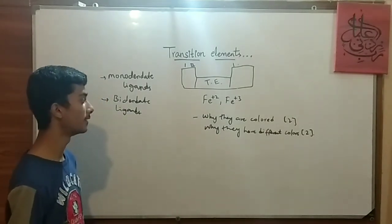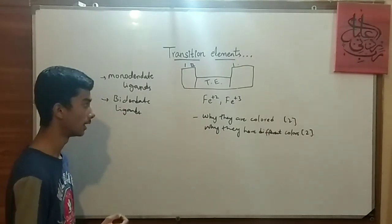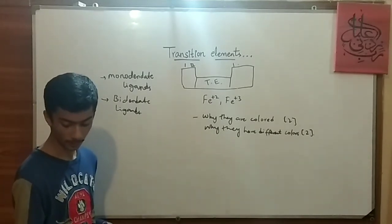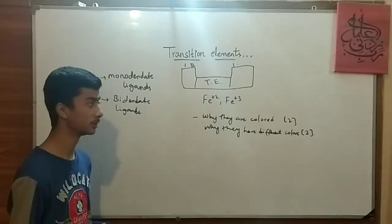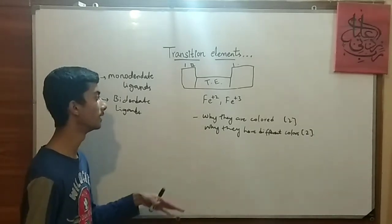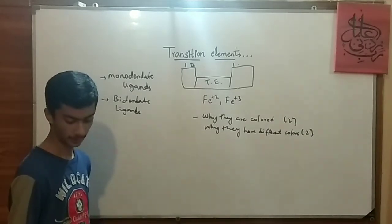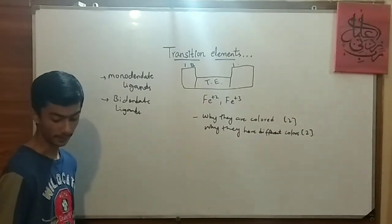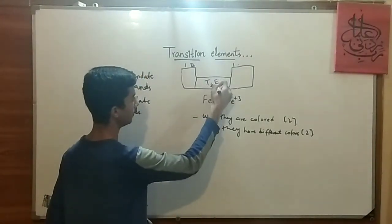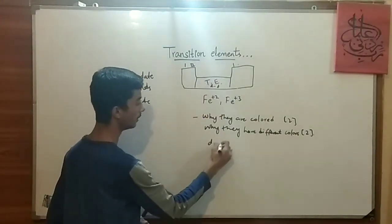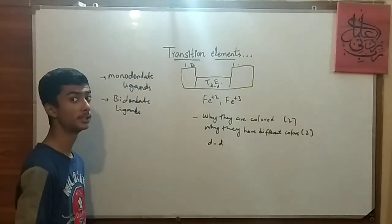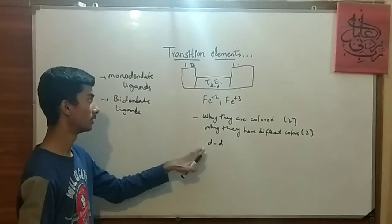And the reason why they have different colors: number 1 point, that electron promotion to higher orbital absorbs a photon. When the electron goes in the higher orbital, they absorb a photon and then they give a different color. And the reason is that in the d-d energy gap, the energy gap is different. If they are going to this one it has a different gap, they are going to this one it has a different gap.